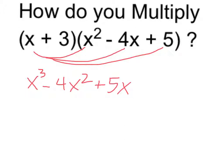Now I have to multiply the three by everything in the trinomial. So 3 times x squared is 3x squared, then we have minus 12x, and finally 3 times 5 is plus 15.